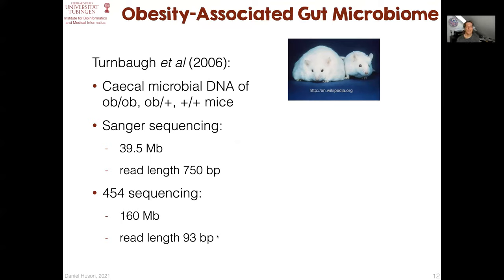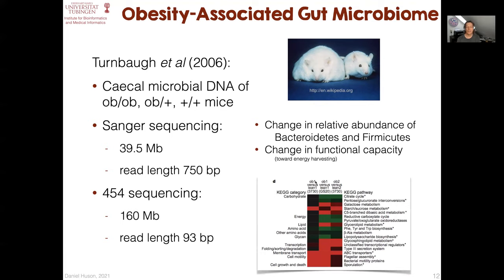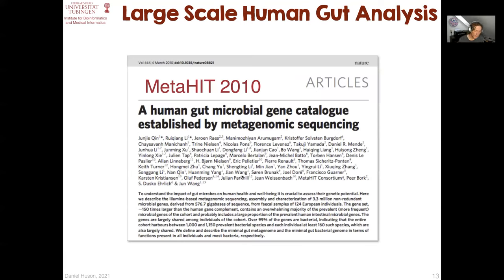Just for context, in 2006 a paper was published exploring the application of metagenomics to problems of potential medical interest — for example, obesity in modified mice — looking at the shift in taxonomic composition inside the gut, and also changes in the functional capacity of the gut microbiome. That was a small dataset. One of the first quite large datasets was published in the MetaHit 2010 paper, where roughly 600 gigabases of sequence was produced to study the gut microbiome of 124 European subjects.